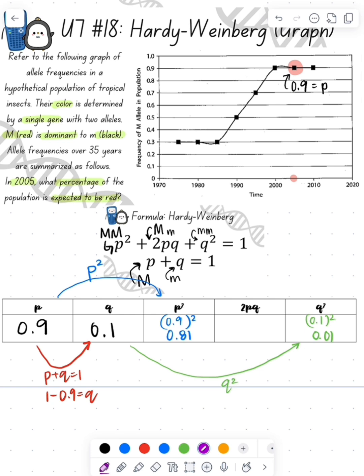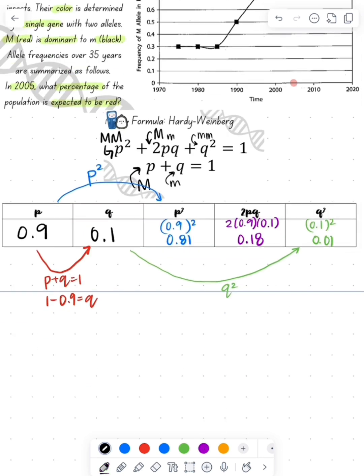Now to find 2pq, we do 2 times our P times our Q, so that's going to give me 2 times 0.9 times 0.1, which gives me 0.18. Let's write all these out in terms of our genotype. We have homozygous dominant, heterozygous, homozygous recessive, and then we see our P squared, our 2pq, and our Q squared value.